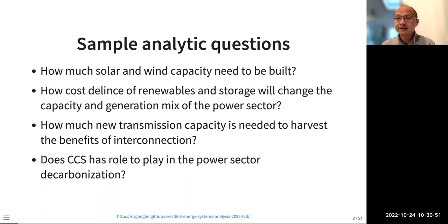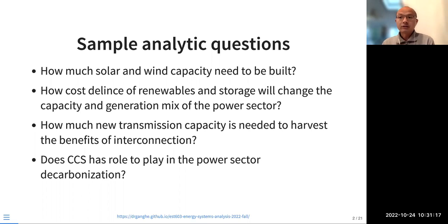That has to do with the key assumptions — for example, the costs of specific technologies. This can include solar, wind, offshore wind, storage, and other emerging technologies. How much new transmission capacity is needed to harvest benefits of interconnections, especially when we talk about larger interconnections between cross regions? Those high voltage or ultra-high voltage transmission lines can make huge differences.